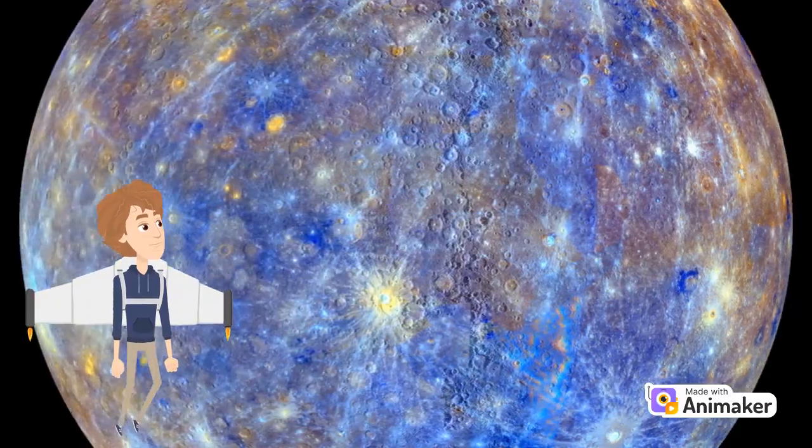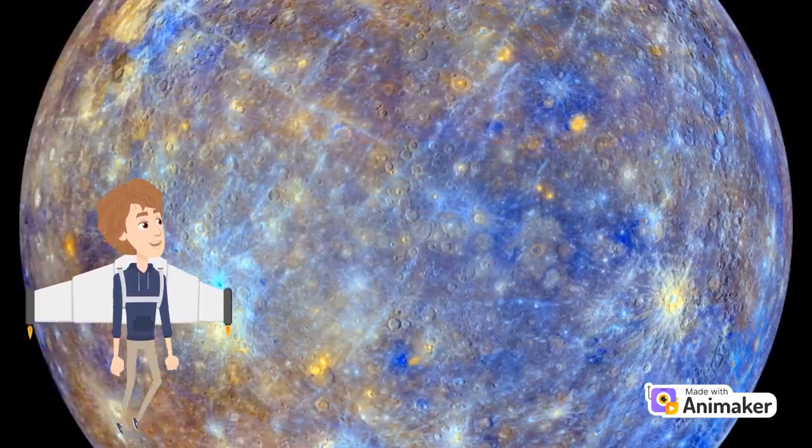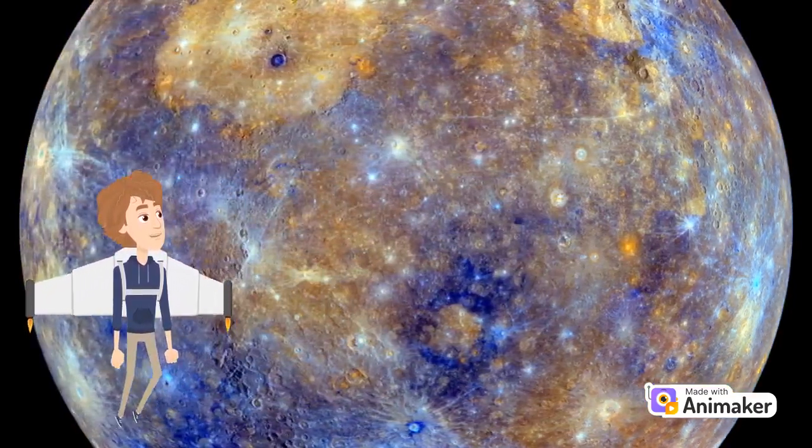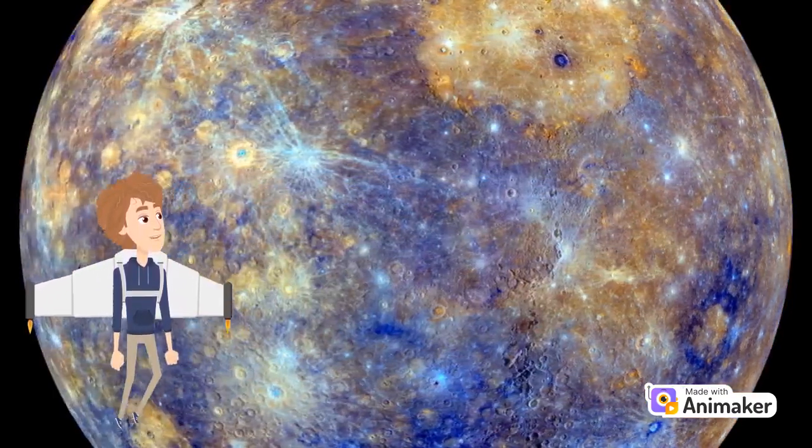The smallest planet in our solar system and nearest to the sun. Mercury is only slightly larger than Earth's moon.